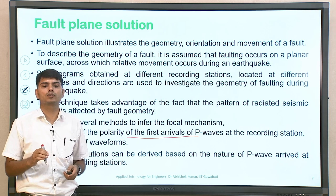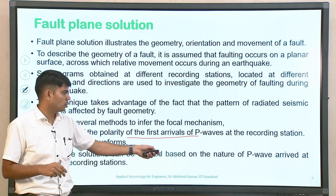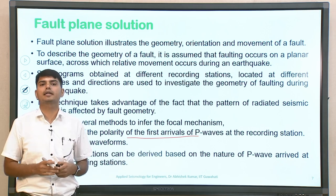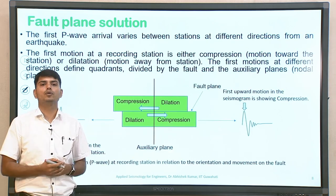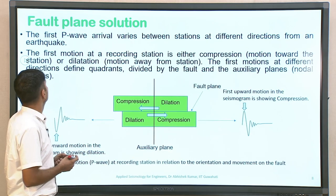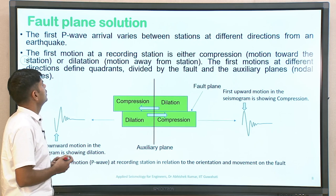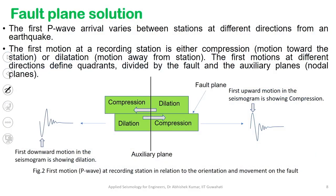Taking that primary wave signature — the polarity of the first P-wave arrival — into account is itself indicating what kind of movement happened during a particular earthquake on a particular fault. Fault plane solution can be derived from the nature of first P-wave motion as arrived at different recording stations. You can see the first P-wave motion recorded at different recording stations during a particular earthquake.